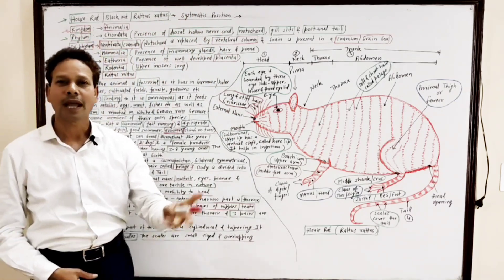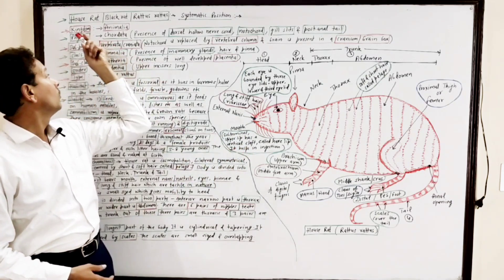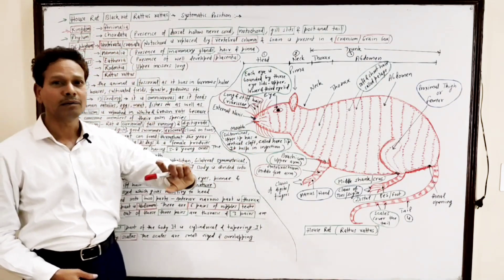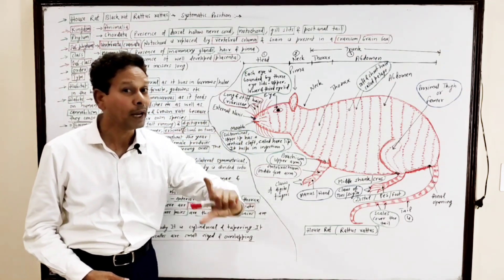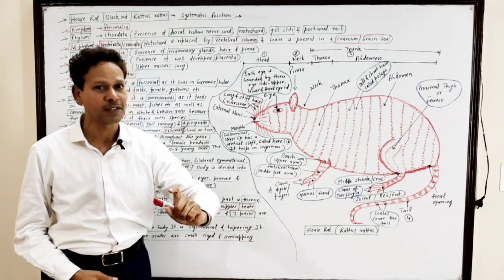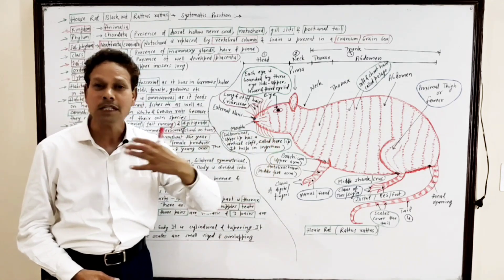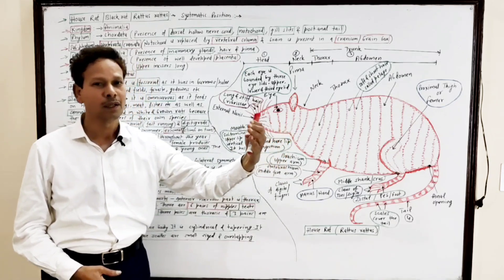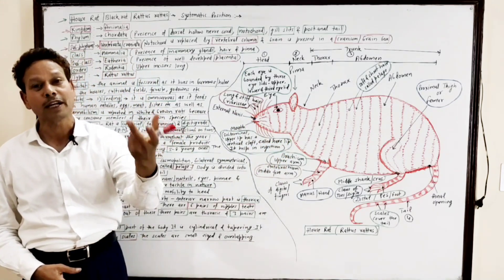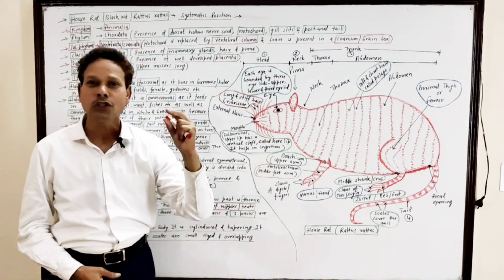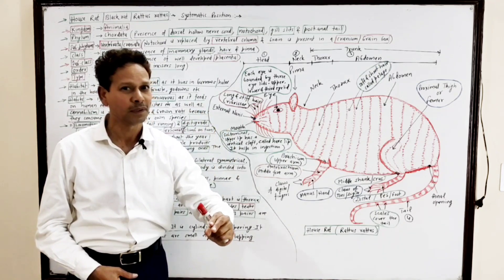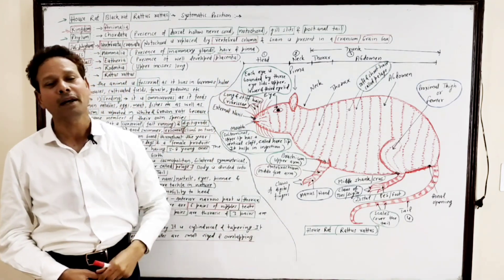Kingdom Animalia, Phylum Chordata. As name indicates, Chordata means presence of a dorsal solid rod-like structure, the notochord. Due to presence of notochord, the animal is placed in phylum Chordata.